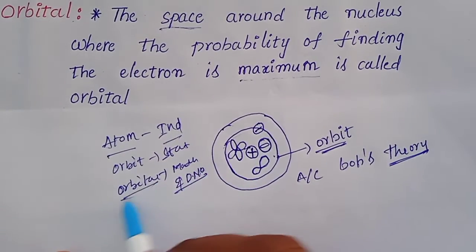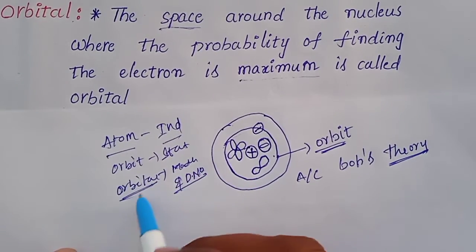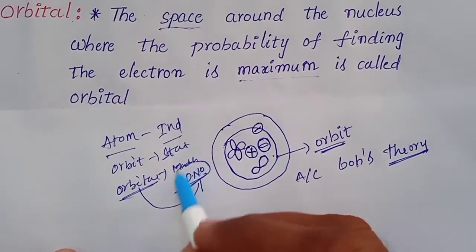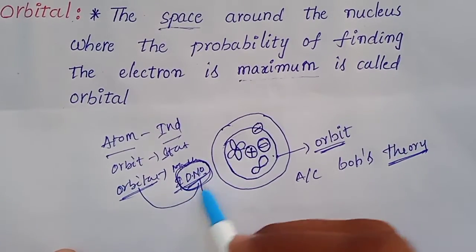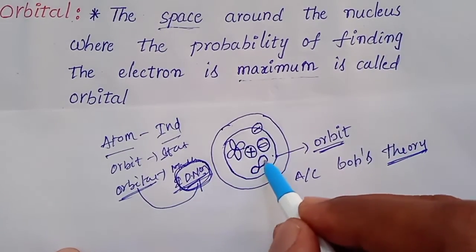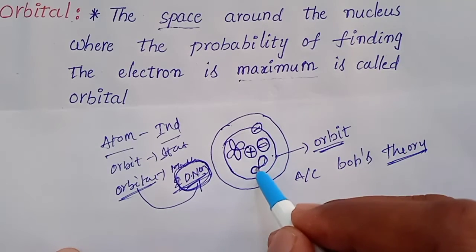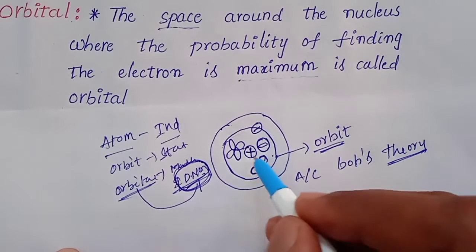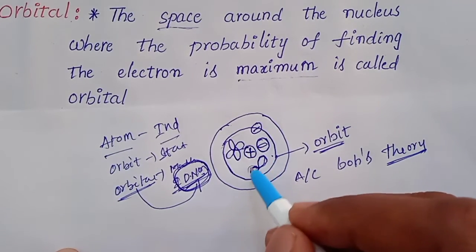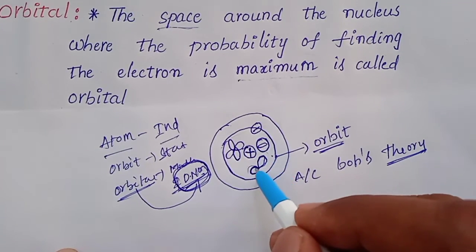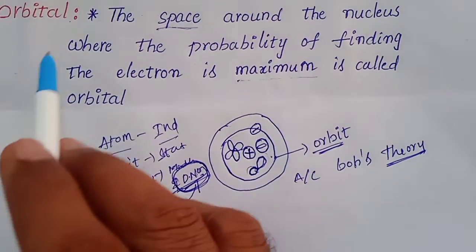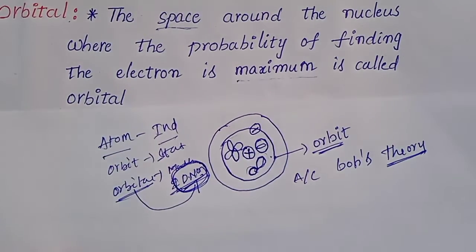The orbital is the final destination — the boundary space around the nucleus where we find the electron. We call it the orbital.